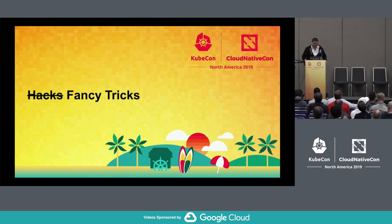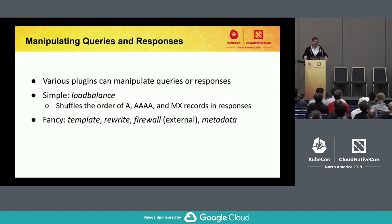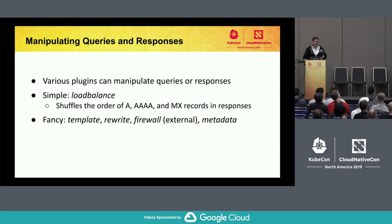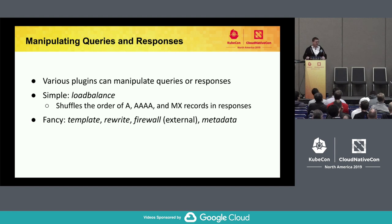Now I'll talk about a couple of fancy tricks you can do — things you may not expect to be able to do with your DNS server. CoreDNS, because of its plug-in architecture, gives each plug-in an opportunity to make a decision about what to do with the request or response. There's a load balance plug-in: if you query for A records with a given name and get back three or four records, it'll just shuffle the order — a simple DNS-based load balancer, useful even for clients that just take the first record.